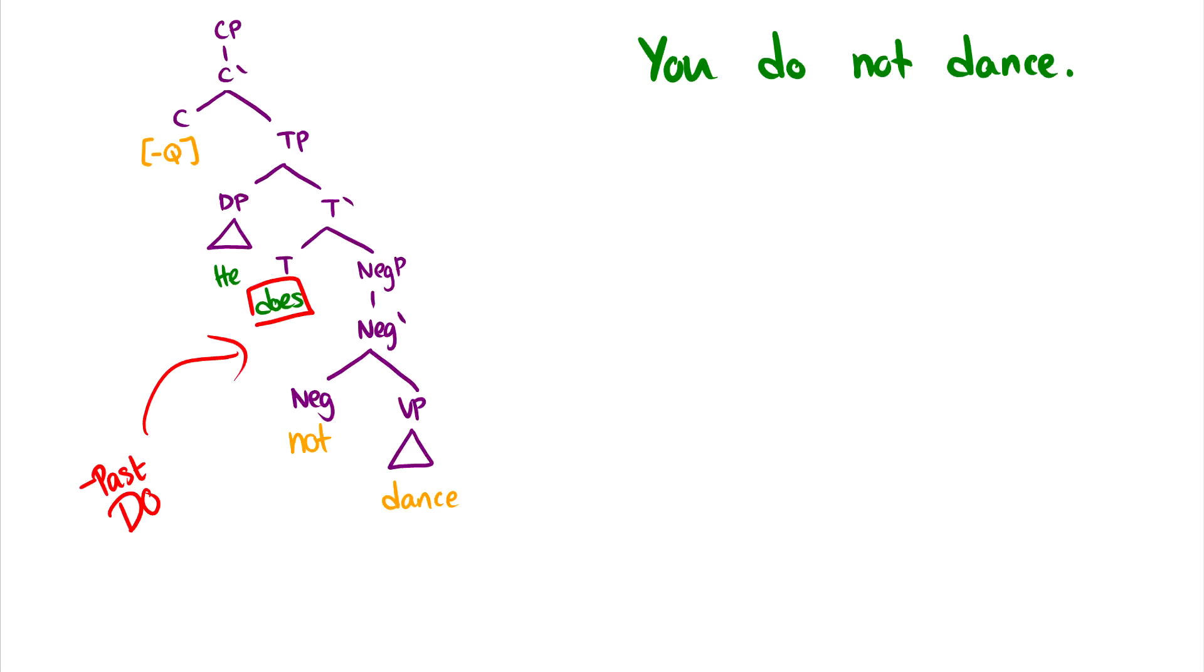And we know do is in T because do picks up this inflectional morphology. So this is how we know that do actually does make it into T, and it's not just inserted into C. So it doesn't just appear here like we could believe, it actually does go into T. And then we can do some questions.